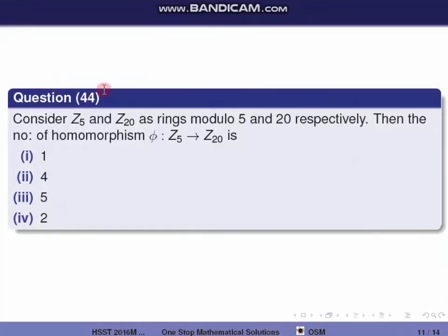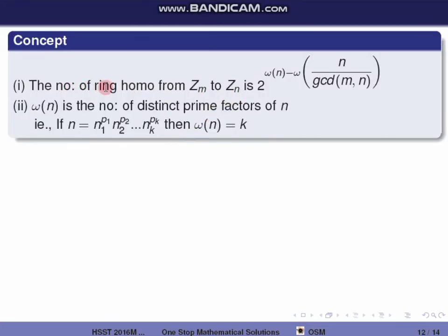Next question, question 44: Consider Z5 and Z20 as rings modulo 5 and 20 respectively. The number of ring homomorphisms from Z5 to Z20 is given by 2^(ω(20/GCD(5,20))), where ω(n) is the number of distinct prime factors of n.